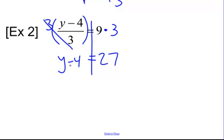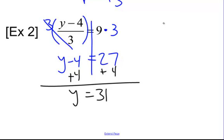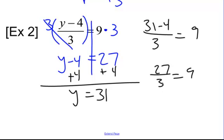Then, to solve it, since it's subtraction, we add 4 to both sides. We would get y equals 31. Now, if I put that back in the equation, let's see what happens. 31 minus 4, because we know y is 31, so we plug that in, equals 9. 31 minus 4 is 27. Divided by 3 is 9. So that works.